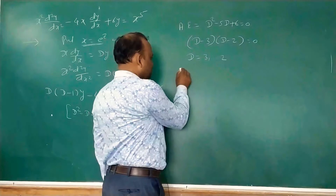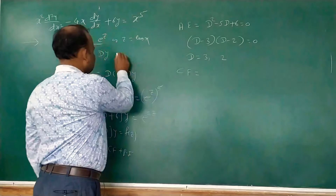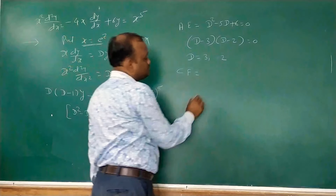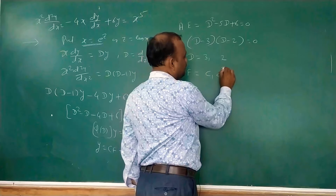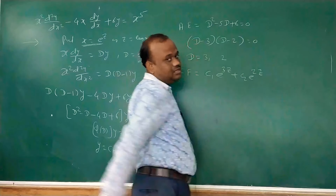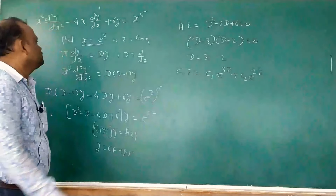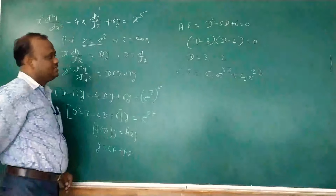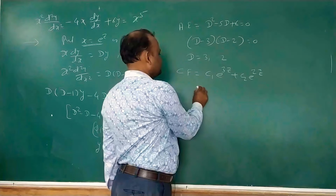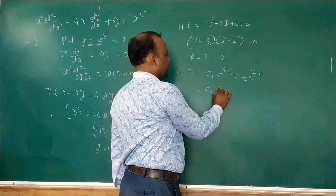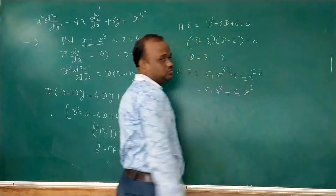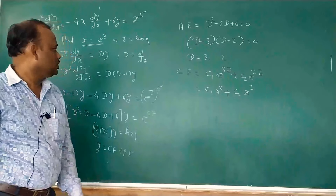Using these roots (capital D is d/dz), the CF in terms of z is c₁e^(3z) + c₂e^(2z). Since e^z = x, we have e^(3z) = x³ and e^(2z) = x². Therefore CF = c₁x³ + c₂x².